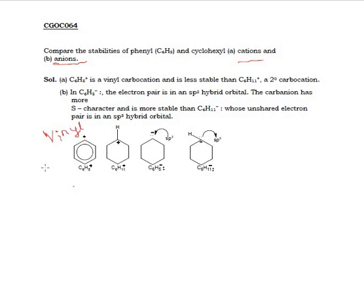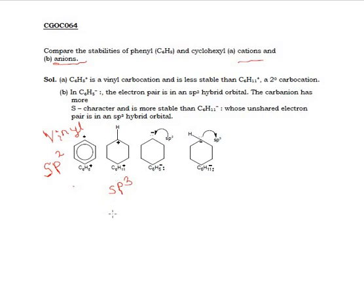So what will happen? This phenyl cation will be sp2 hybridized. And if I talk about the cyclohexyl carbocation, then this will be sp3 hybridized. Comparing the stability of these two, the cyclohexyl carbocation will be more stable.